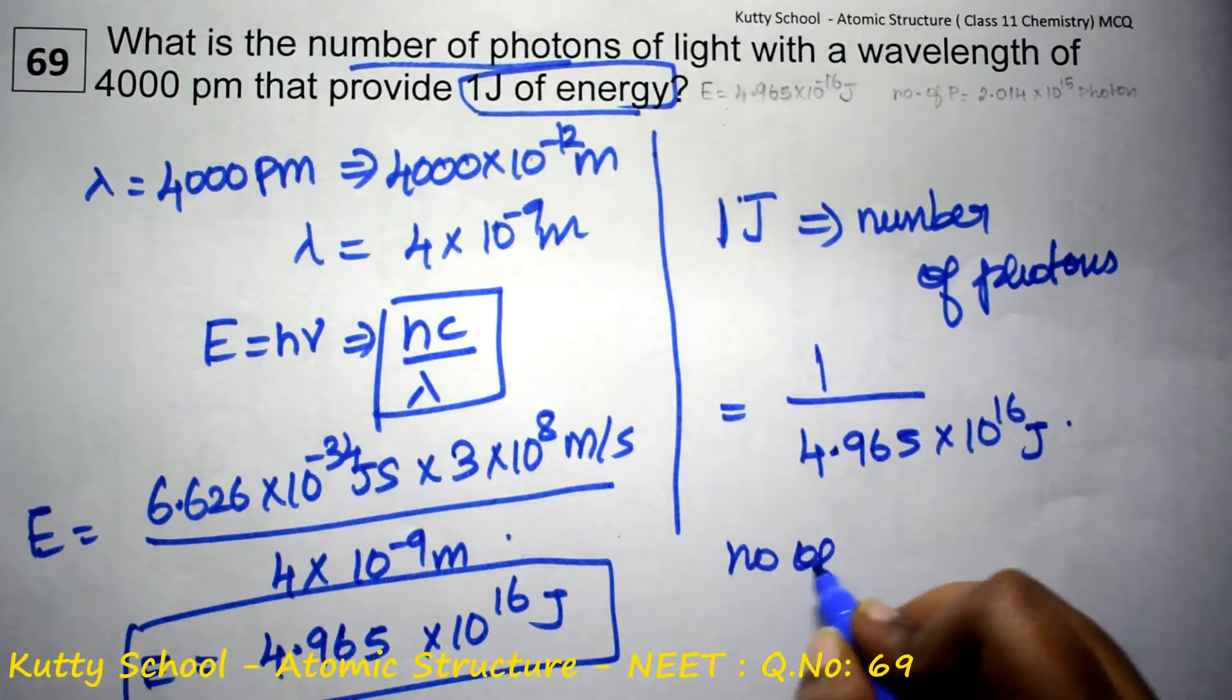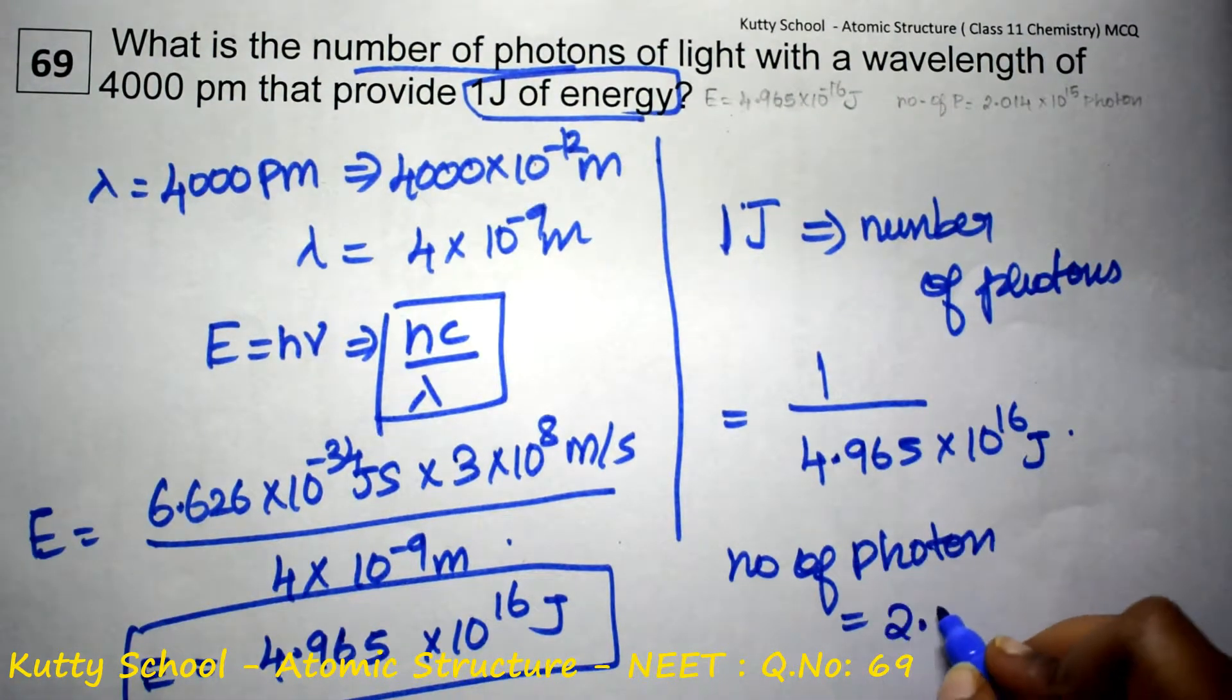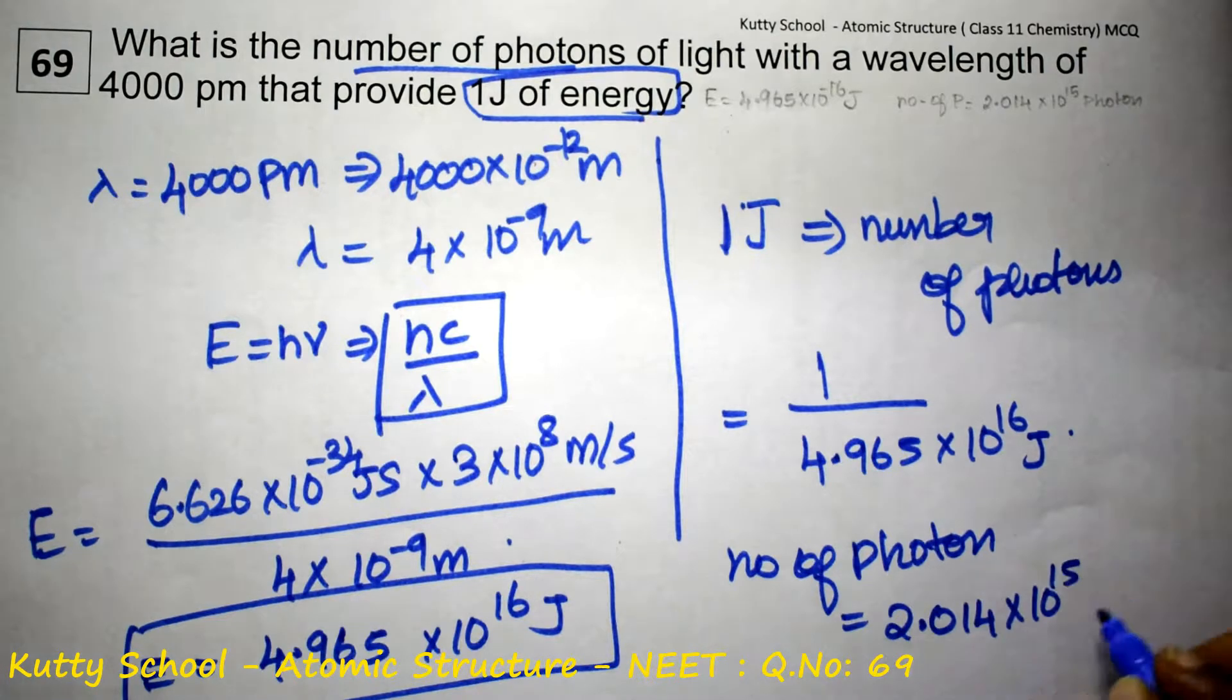Number of photons will be, calculating this, 2.014 into 10 power 15 photons.